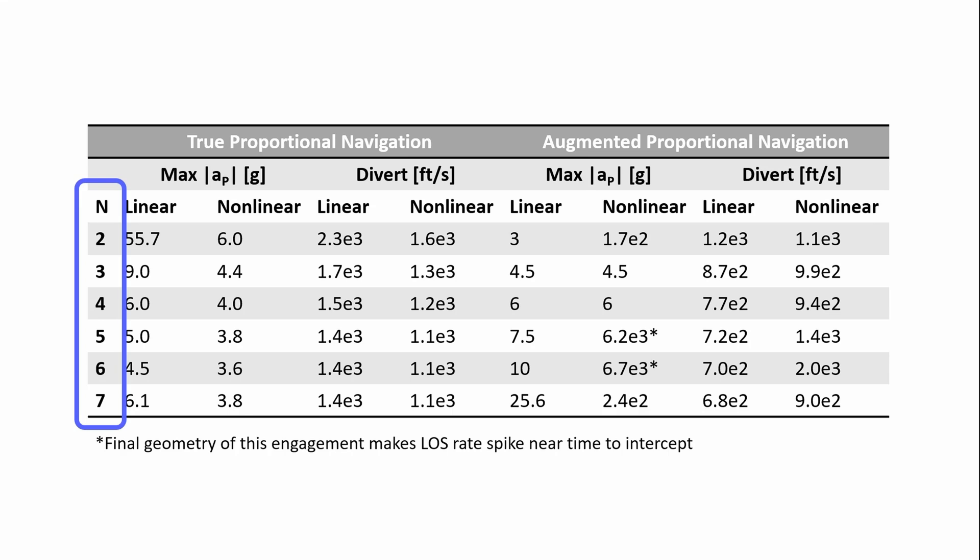Comparing peak acceleration for the linearized engagements, we see that up to a navigation gain of 4, augmented is either equal to or less than true. However, for larger navigation gains, that additional term in augmented pronav causes the initial max acceleration requirement to exceed the max acceleration in true pronav.